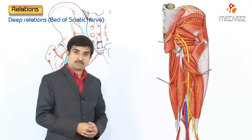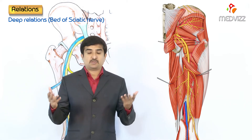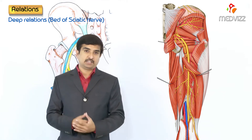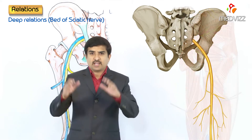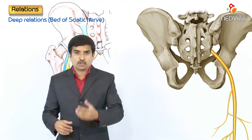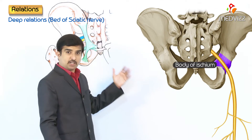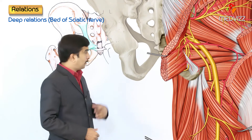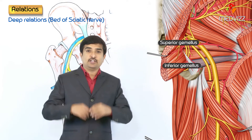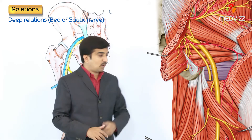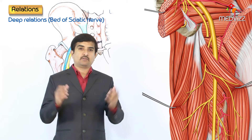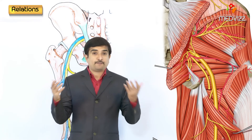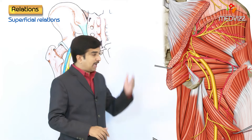Regarding the relations of the sciatic nerve, the deep relations form the bed of the nerve. From above downwards, the sciatic nerve is related to the body of the ischium (posterior surface), obturator internus, superior and inferior gemellus muscles, quadratus femoris, and adductor magnus.